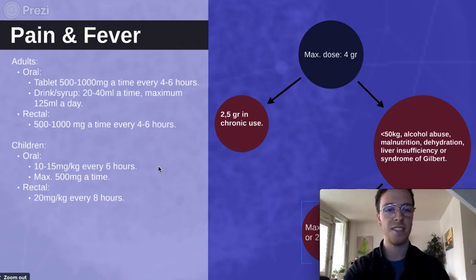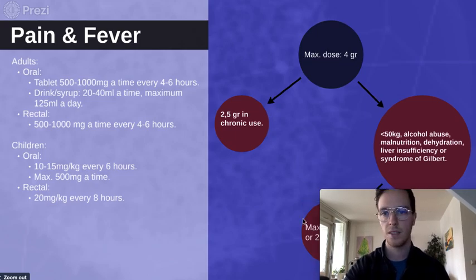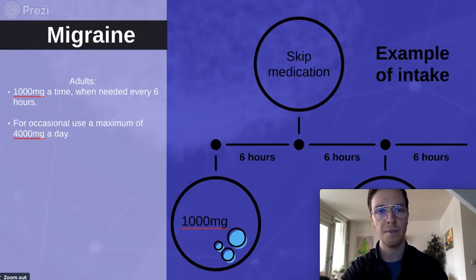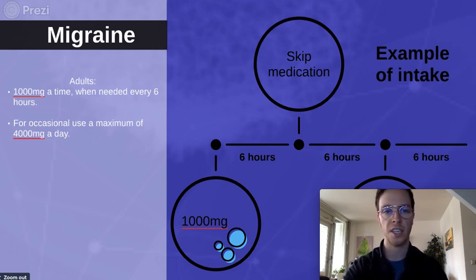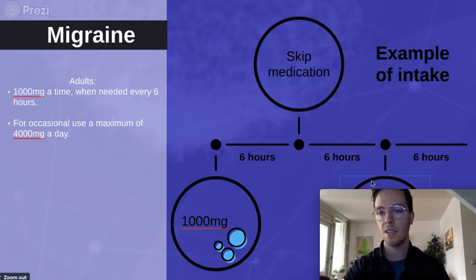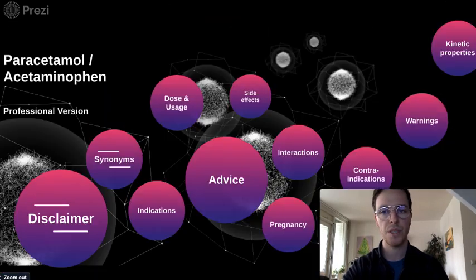For children it's a bit different. Orally: 10 to 15 mg per kg every 6 hours, to a maximum of 500 mg at a time. Rectally: 20 mg per kg every 8 hours. If using paracetamol for migraine, make sure to use 1,000 mg at a time to get the positive effects, every 6 hours. For occasional use, 4,000 mg is allowed. For example: take 1,000 mg, wait 6 hours, maybe skip a dose if you're feeling better, then take again as needed.